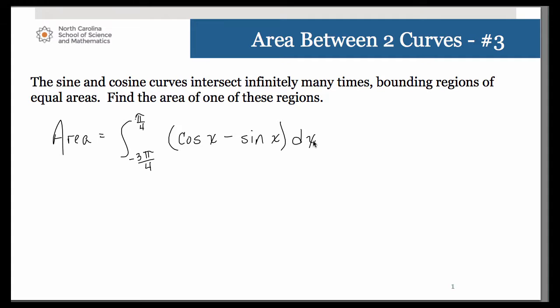You could go ahead and do your antiderivative by hand if you'd like. Your antiderivative of cosine, of course, is sine. Antiderivative of sine is going to be negative cosine. So that's going to be minus a negative cosine, so it turns into plus.